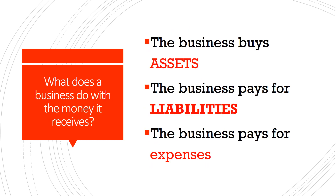What does the business do with the money that it receives? The business could buy assets — the business needs a building, so the owner invests capital into the business and uses that capital to buy a building. The business also pays for liabilities. Maybe the owner didn't have enough money to buy the building, so he had to borrow additional funds, and the business has to pay those liabilities back. The business also needs to pay for expenses.